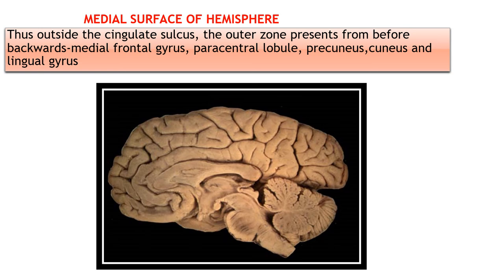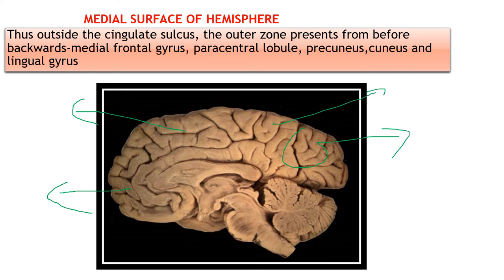Outside the cingulate sulcus, the outer zone presents from before backwards: the medial frontal gyrus, the paracentral lobule, the triangular cuneus, the quadrilateral precuneus, and below that the lingual gyrus. So we have five gyri outside the cingulate gyrus, making six gyri in total when the cingulate gyrus is included.